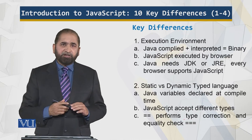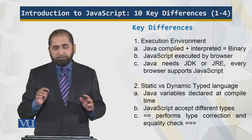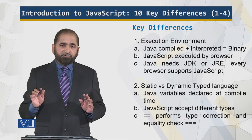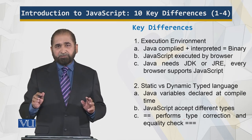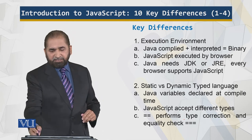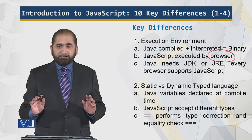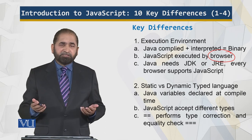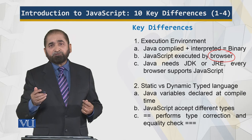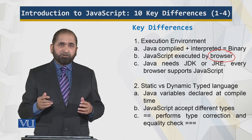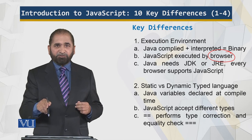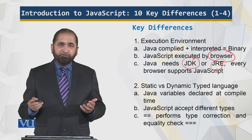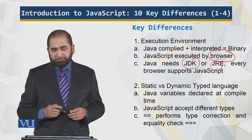The execution environment of Java and JavaScript is very different. Java is compiled, interpreted, and then produces binary bytecode, which runs on a specific environment — the JDK or JRE. That is not the case for JavaScript. JavaScript is executed directly by the browser and is supported by most modern browsers. Java was developed by Sun Systems; JavaScript was developed by Netscape. Initially it was called LiveScript, but then it became known as JavaScript.